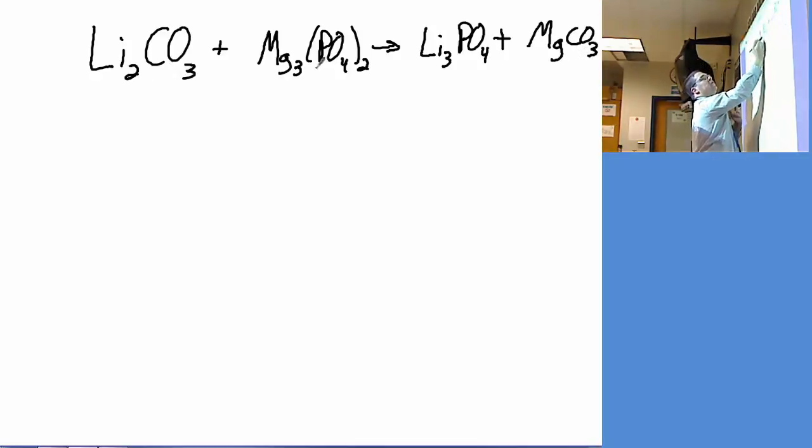Same thing for phosphorus. Phosphorus is only found as part of the phosphate ion, so we're going to keep it together. So our inventory is going to be lithium, carbonate, magnesium, and phosphate.